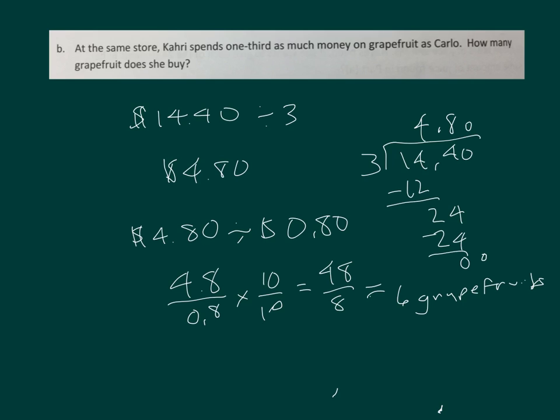So Hari buys six grapefruits, which is also a third of eighteen, the number that Carlo bought. We could have figured it out that way, too.